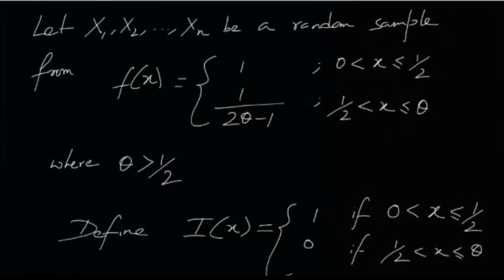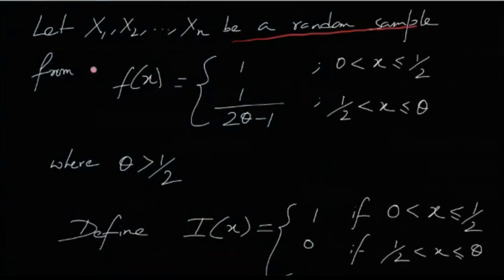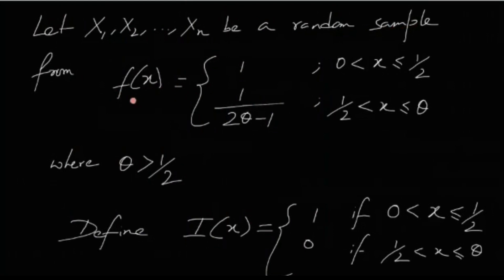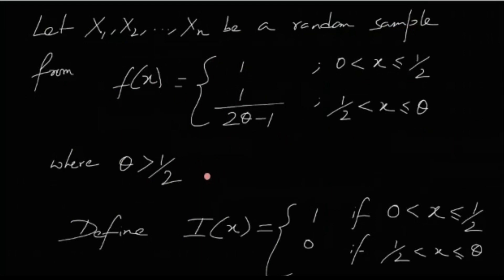Let us try to find the general case. Let x1 through xn be a random sample of size n from the given PDF: f(x) = 1 if x lies between 0 and 1/2, and 1/(2θ − 1) if x lies between 1/2 and θ, where theta is greater than 1/2.